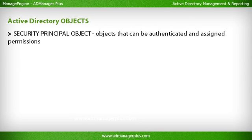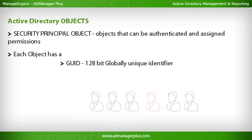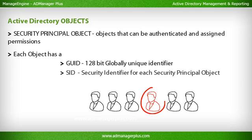Security principle objects are objects that can be authenticated and assigned permissions. Each object has a GUID — a 128-bit globally unique identifier — and a SID, or security identifier, for each security principle object.